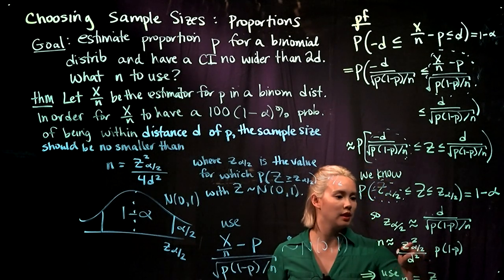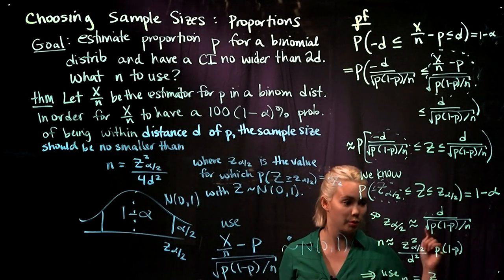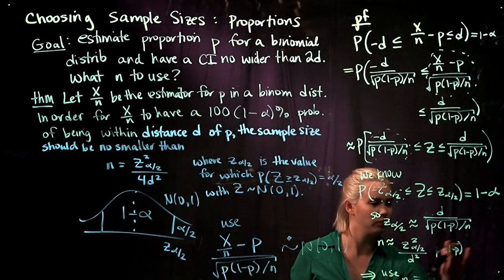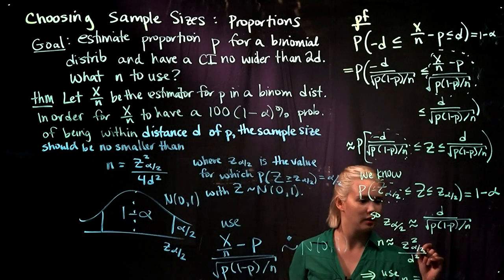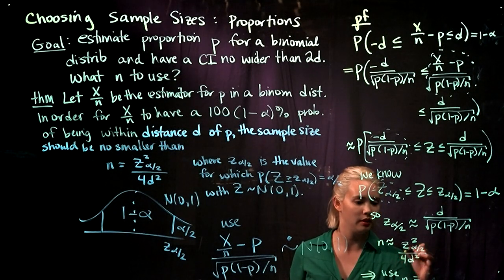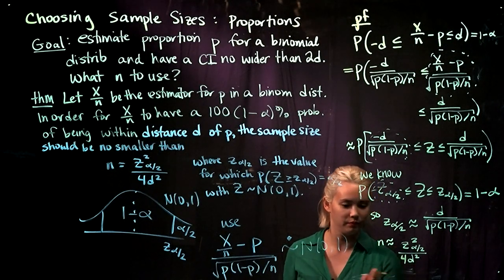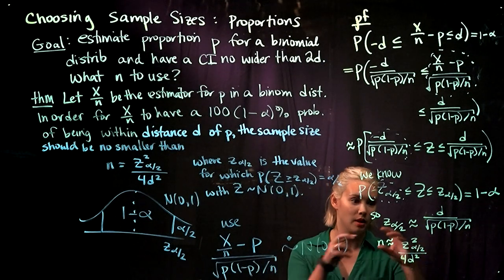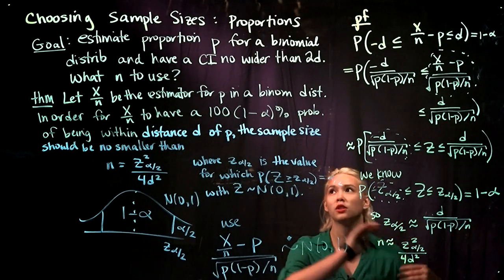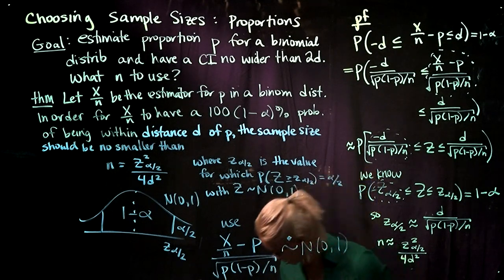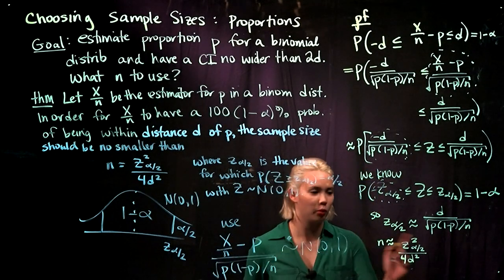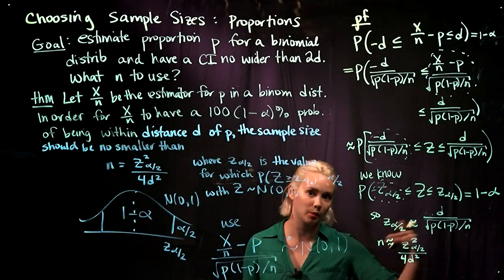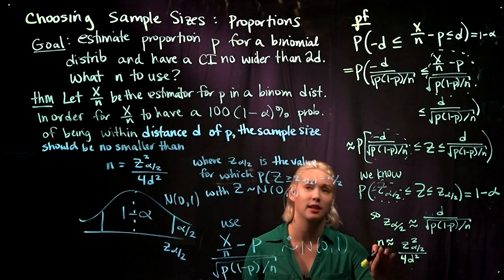Using P equals 0.5, we get Z(α/2) squared divided by D squared times 0.5 times 0.5, which simplifies to Z(α/2) squared divided by 4D squared. This is the worst-case scenario for P, ensuring our sample size is large enough to meet our goal. One important note: we should round up this result to the nearest whole number to ensure the sample size is sufficiently large.